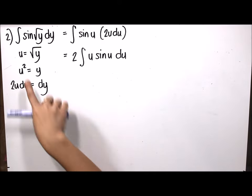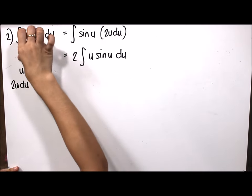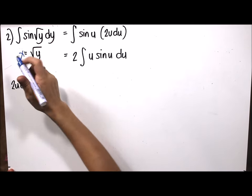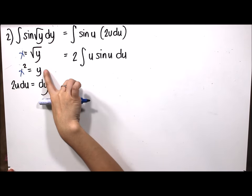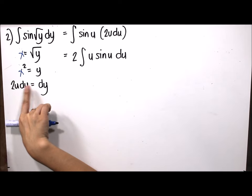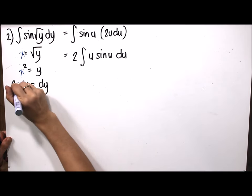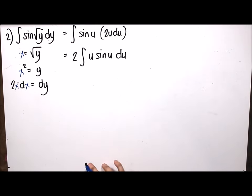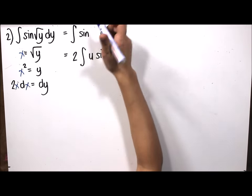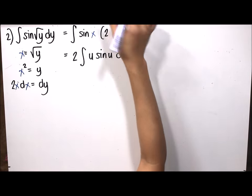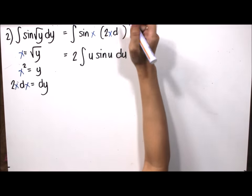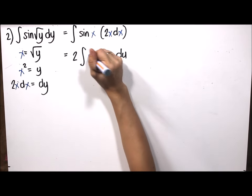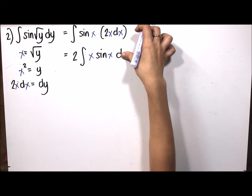We let x be equivalent to the square root of y, so x squared equals y and 2x dx equals dy. Substituting back gives us sine(x) times 2x dx. Factoring out the constant 2, we have 2 times the integral of x sine(x) dx, which will be solved using integration by parts.